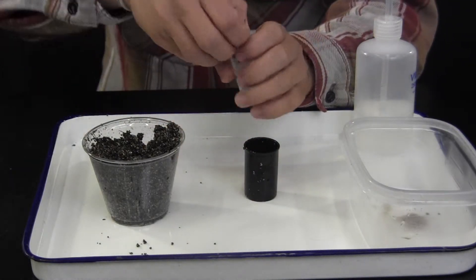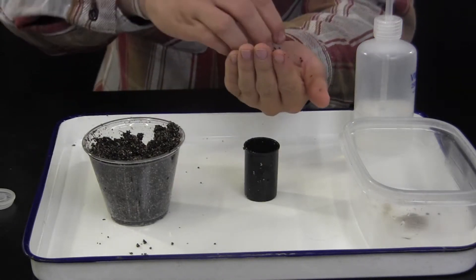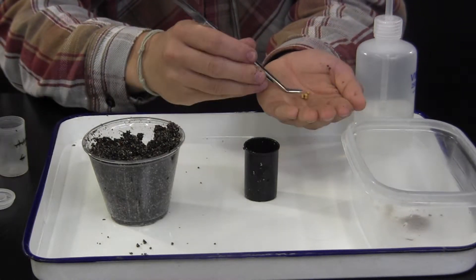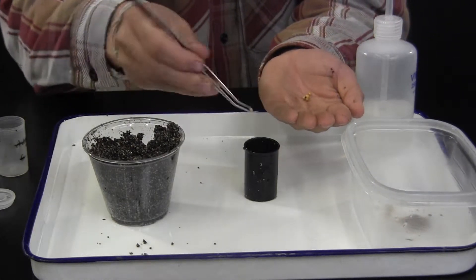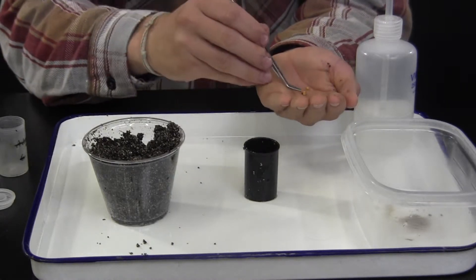Next, obtain five pellets of Osmocote slow release fertilizer and add to the 50% full canister. This fertilizer is 14% nitrogen, 14% phosphorus, and 14% potassium, denoted by the 14-14-14 label.